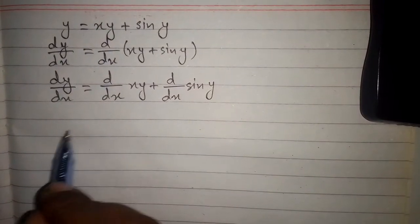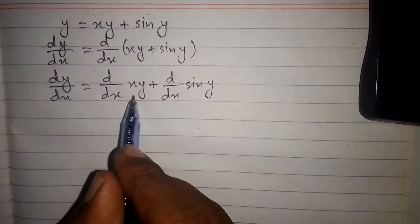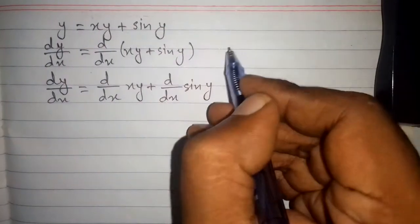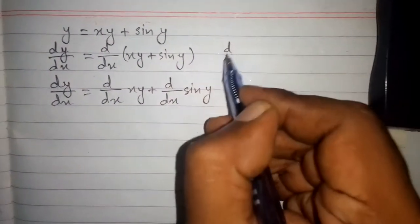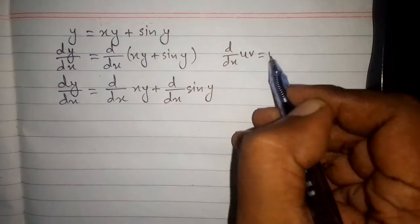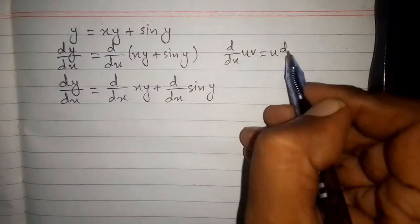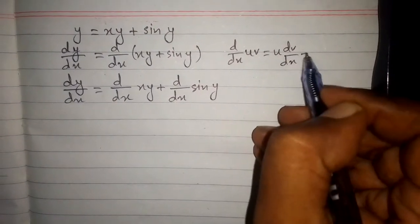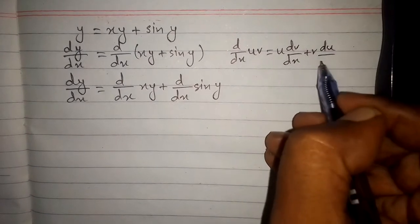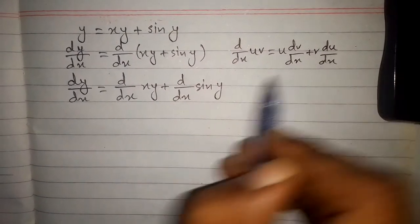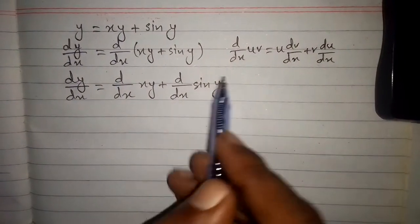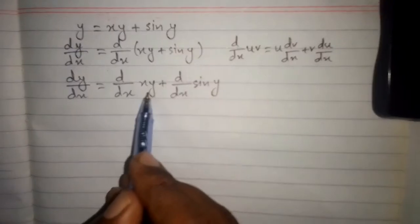Now here we will apply the product rule of differentiation, which is d/dx of uv is equal to u times the derivative of v plus v times the derivative of u. We will apply the product rule of differentiation over here.